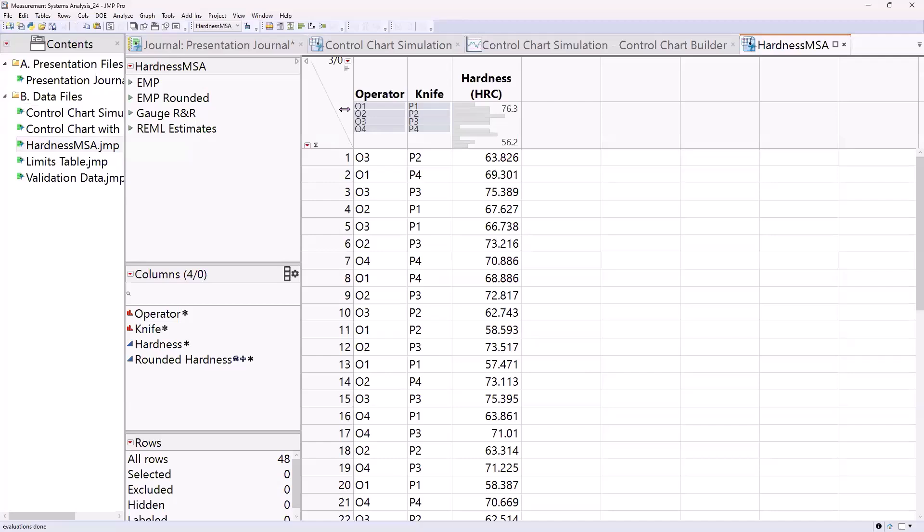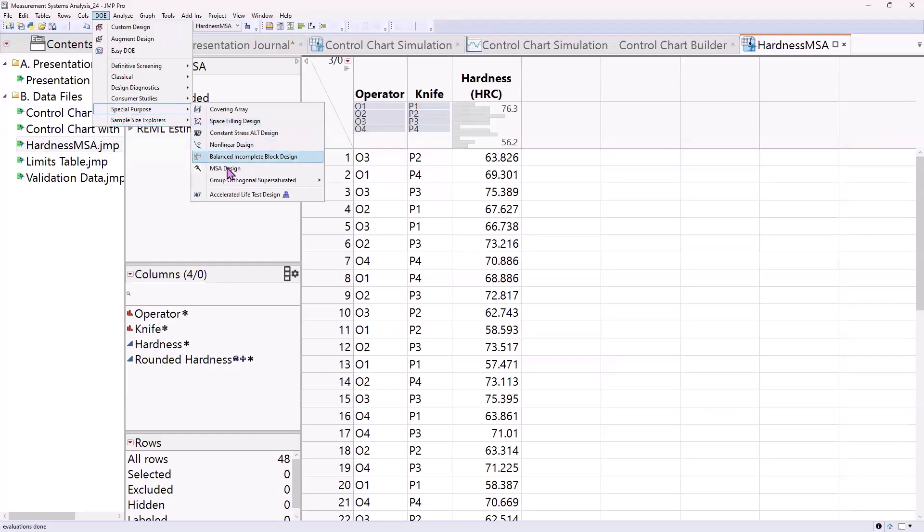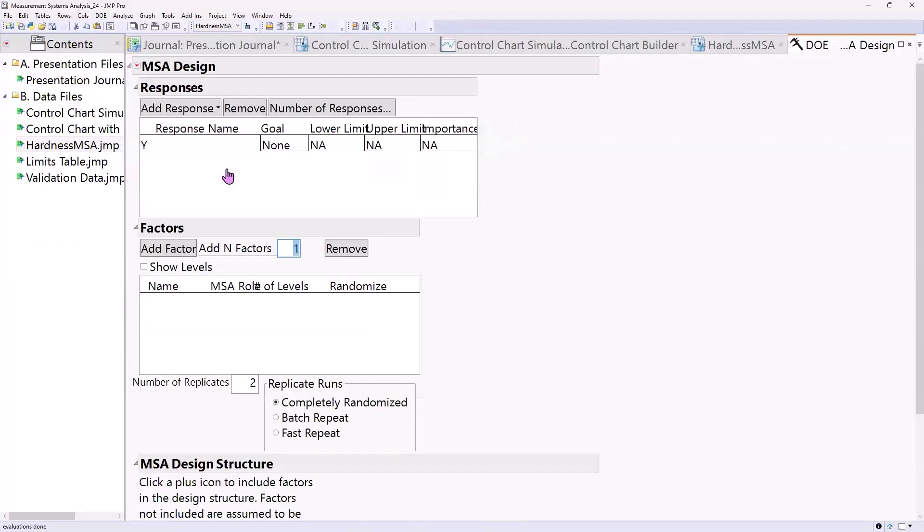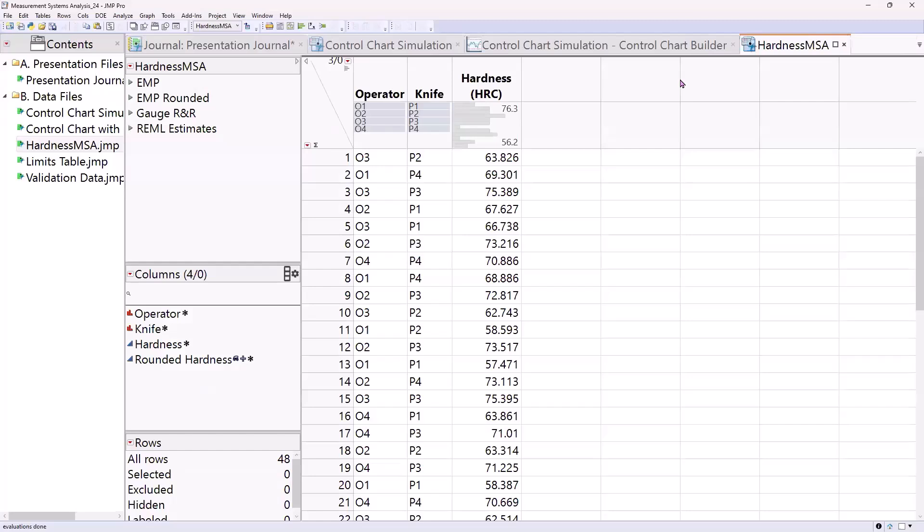In the DOE platform, there is a special purpose tool for MSA design. You can design your data collection plan in this utility. I would highly recommend it. It'll save you a lot of time. But again, just like all designed experiments, it's nice to have a data collection plan. JUMP can help you with that data collection plan.